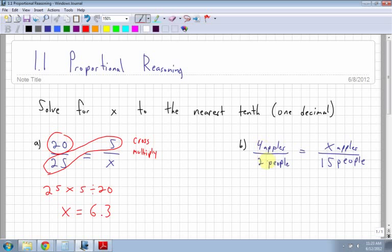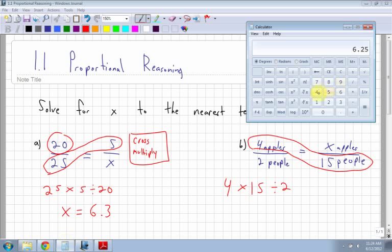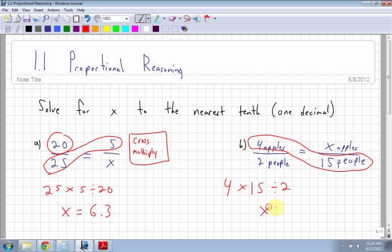So again I look at the top and the bottom and I try to figure out which one I have. Well, I have the four apples and 15 people. So again I cross multiply. I take 4 times 15 and then I divide by 2. So take 4 times 15 divided by 2, which is 30. So my value for x is equal to 30. That means I need 30 apples for 15 people.